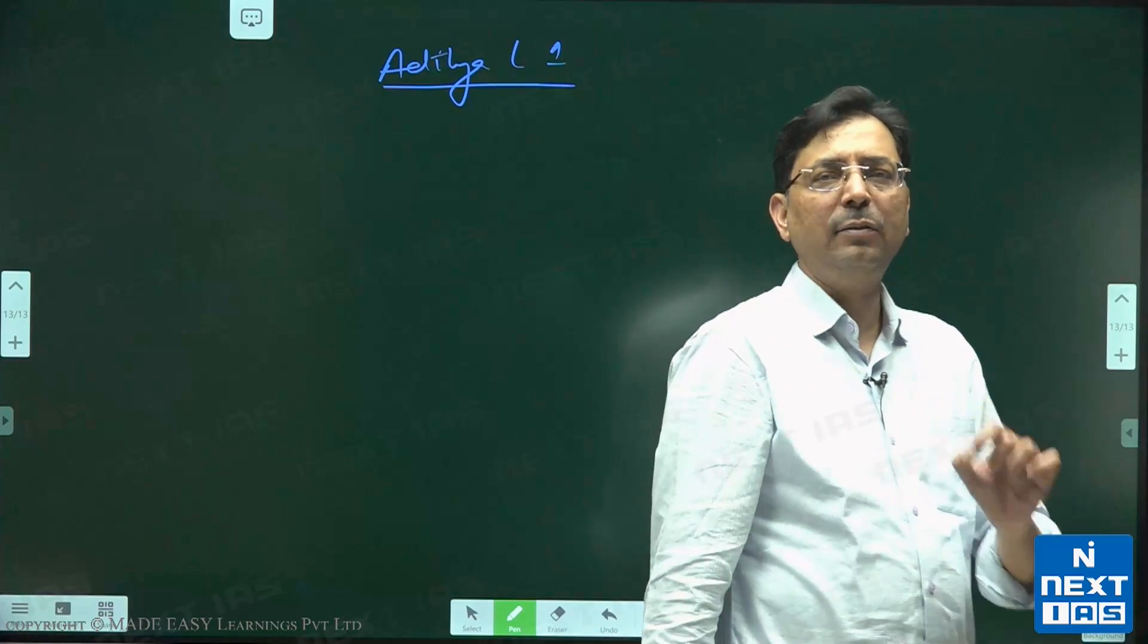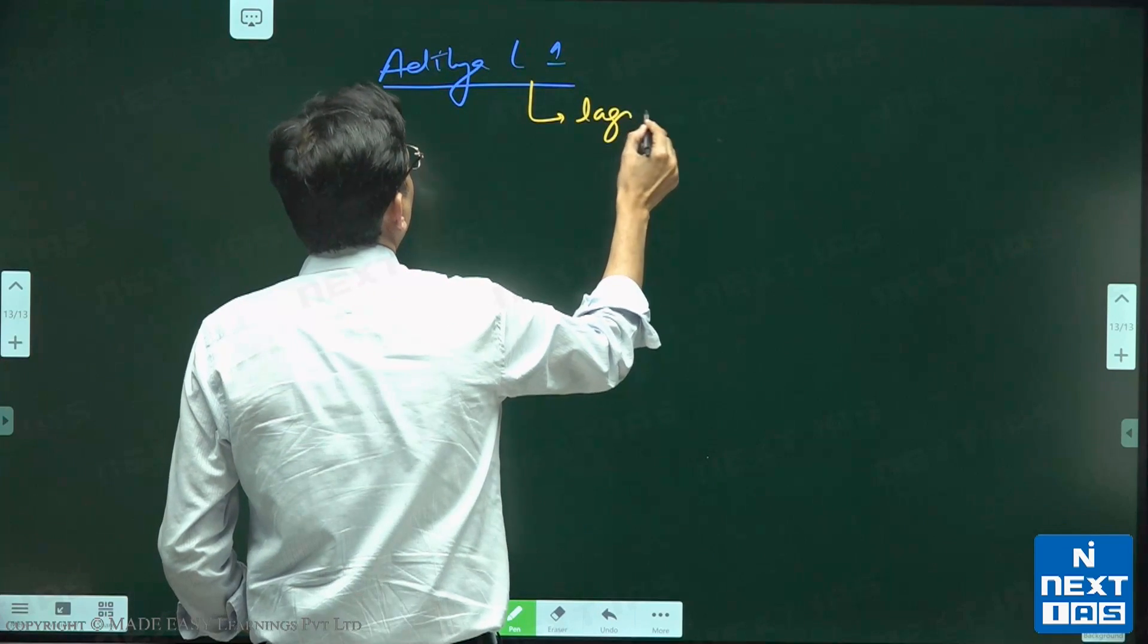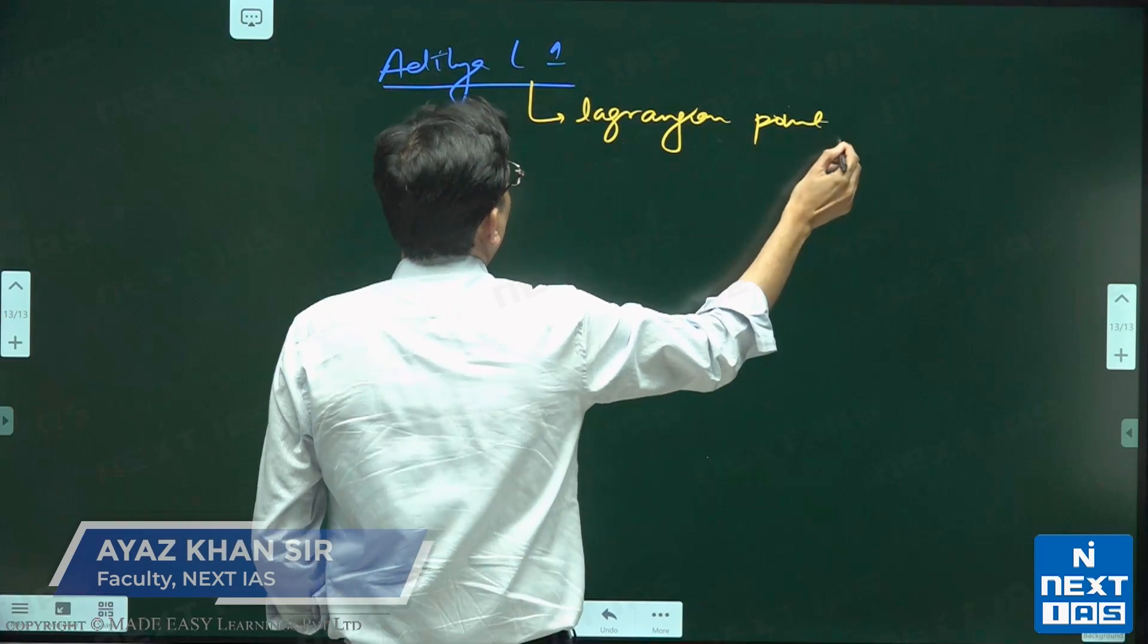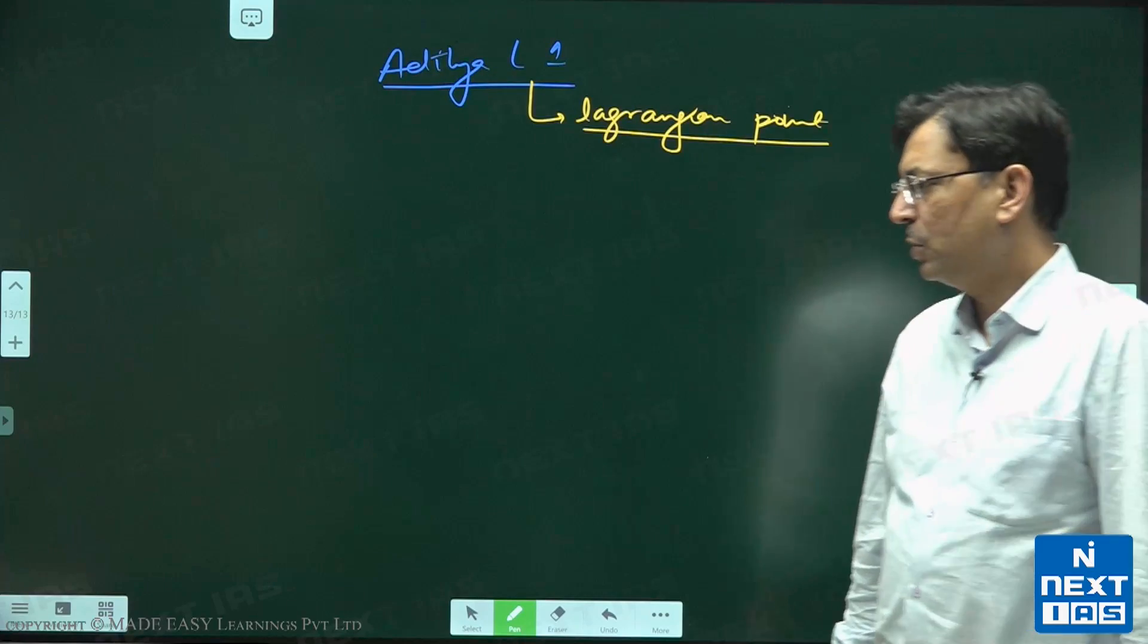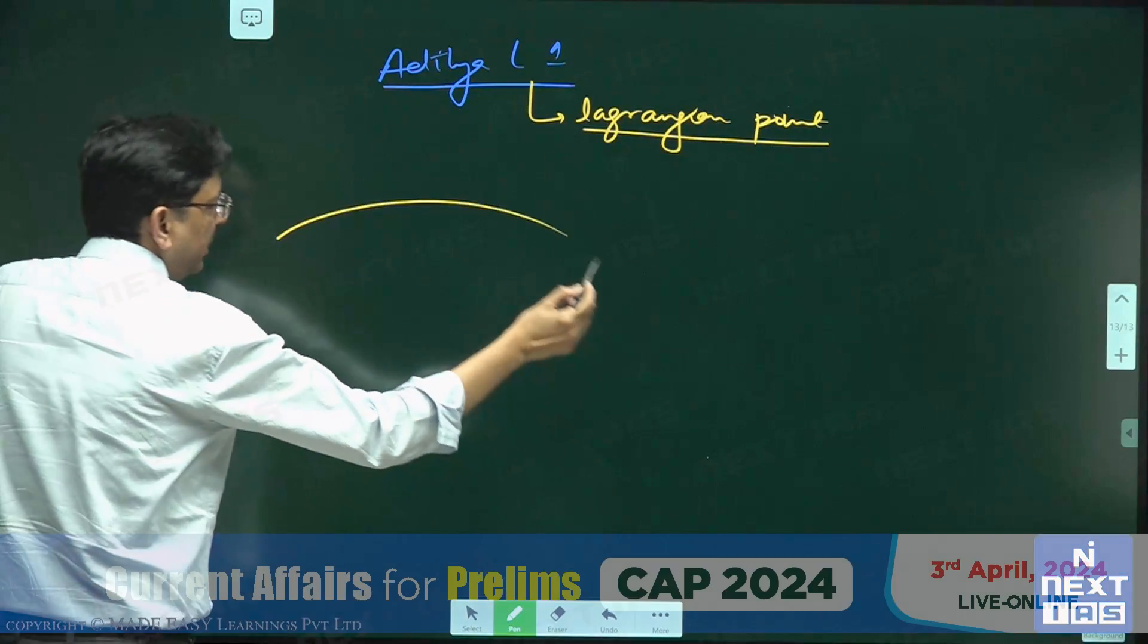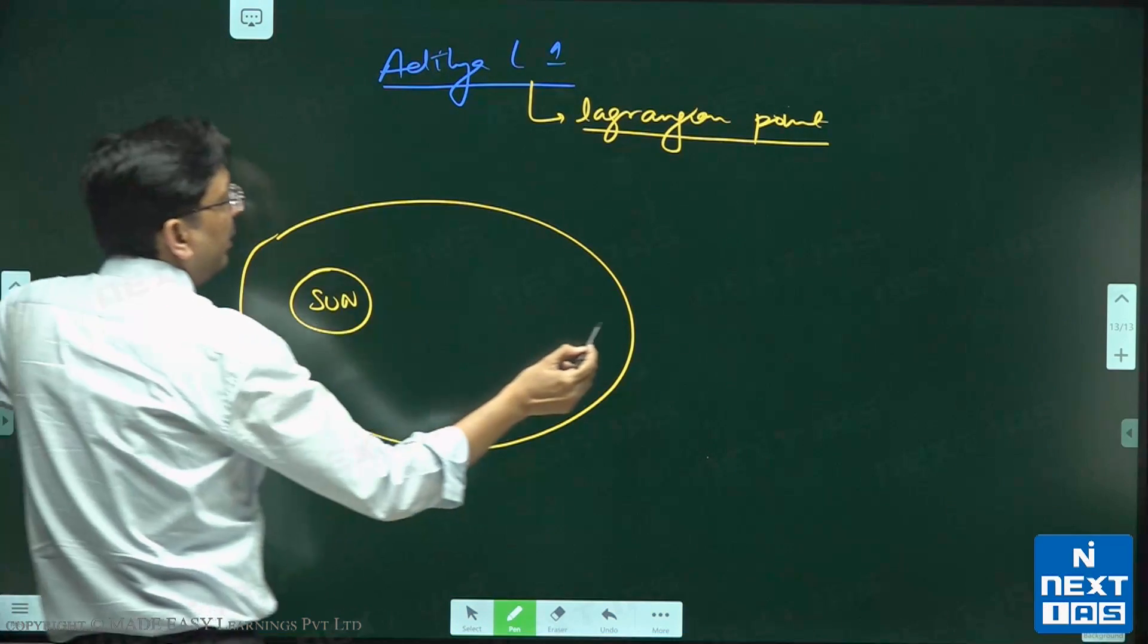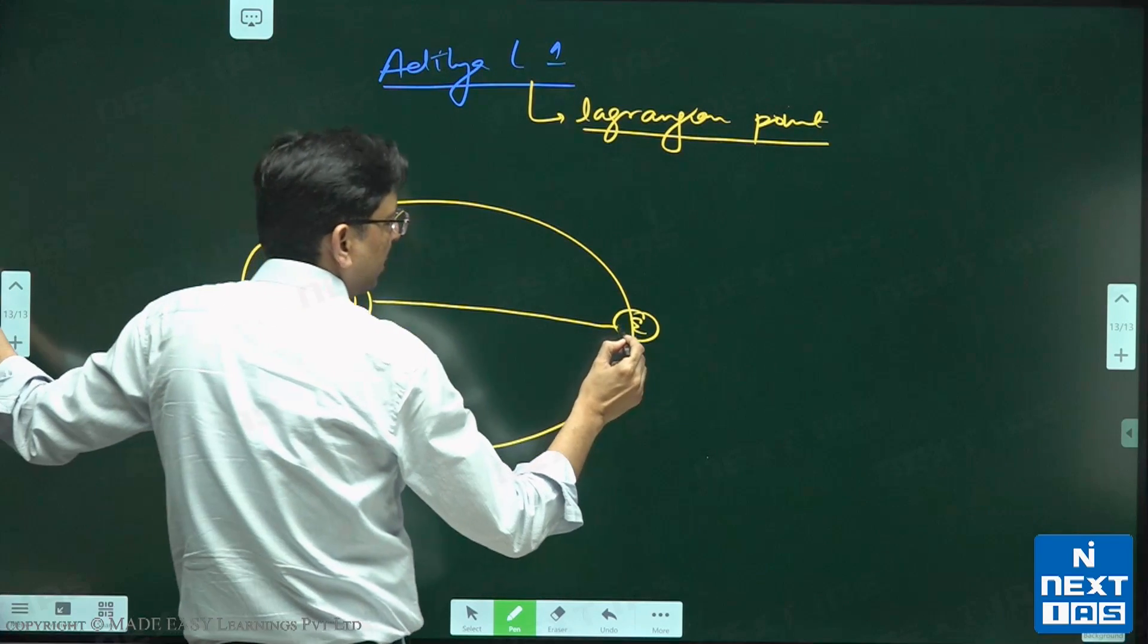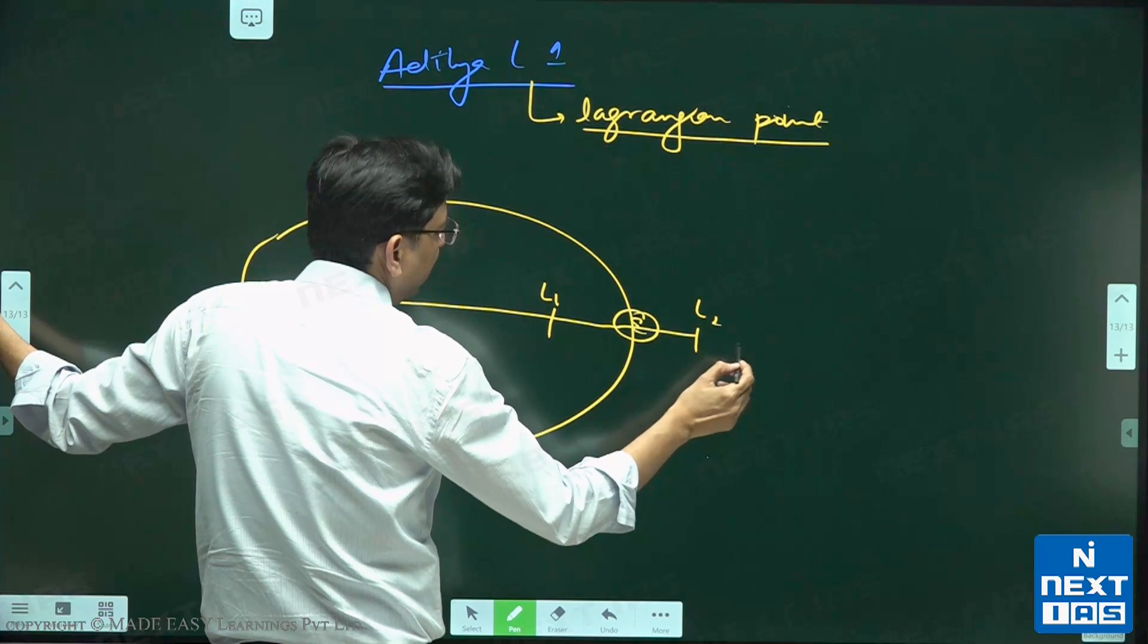Aditya L1 - L1 here means Lagrangian point. So if I make this diagram, here is the Sun, here is the Earth. Then there are five locations like L1 here, L2 here. This is...